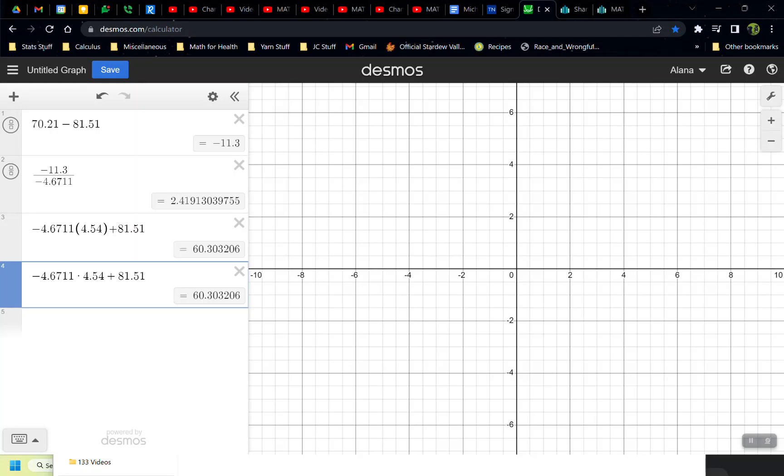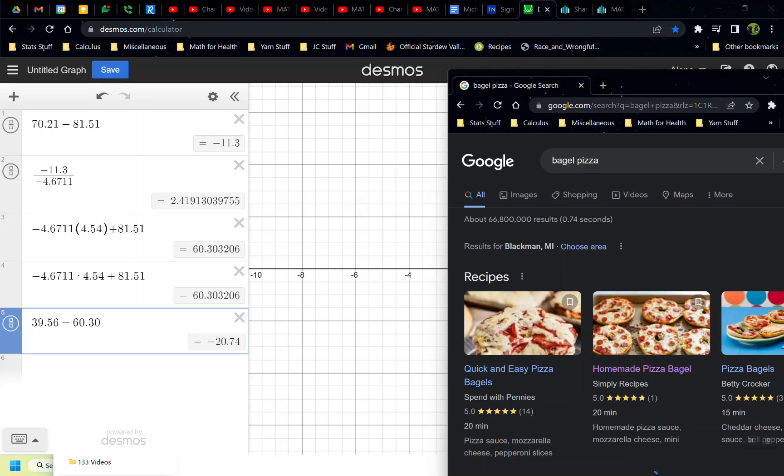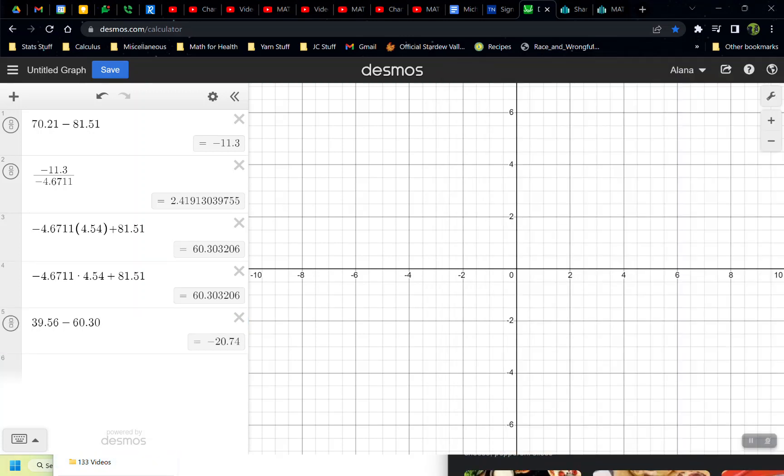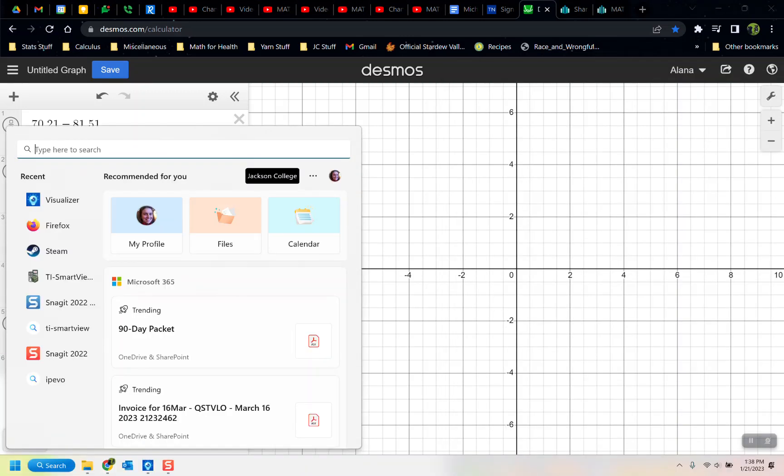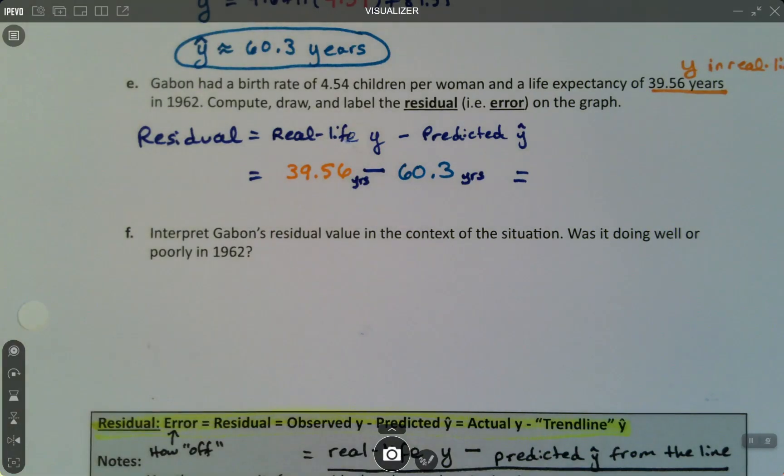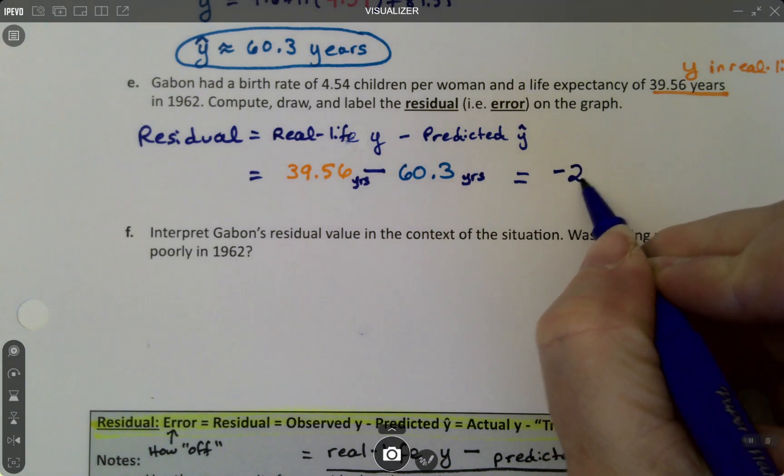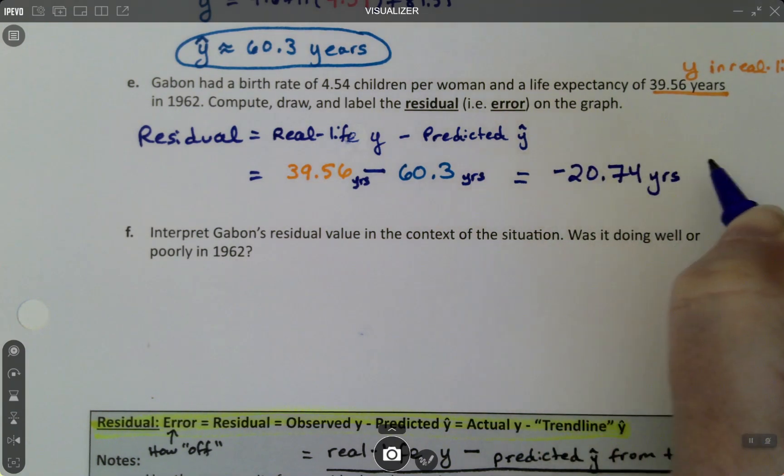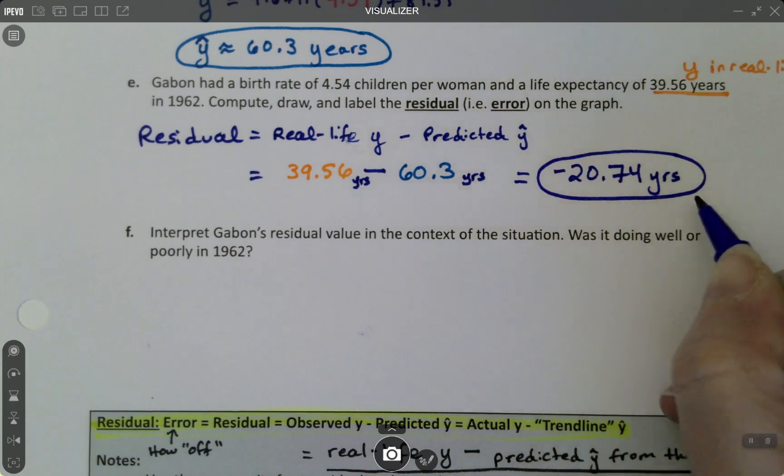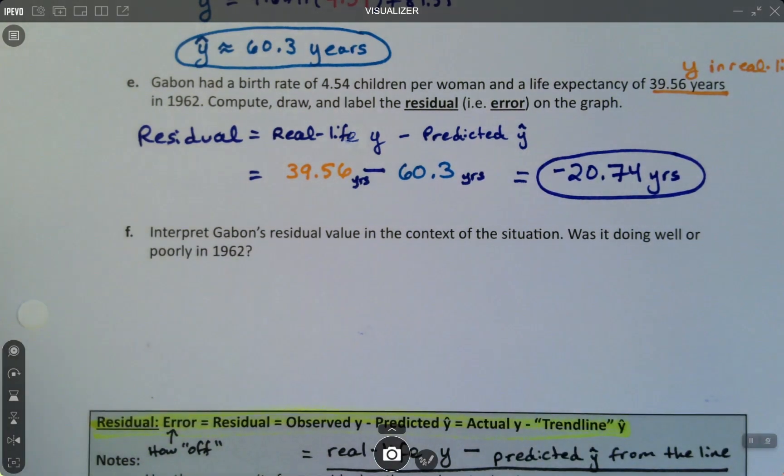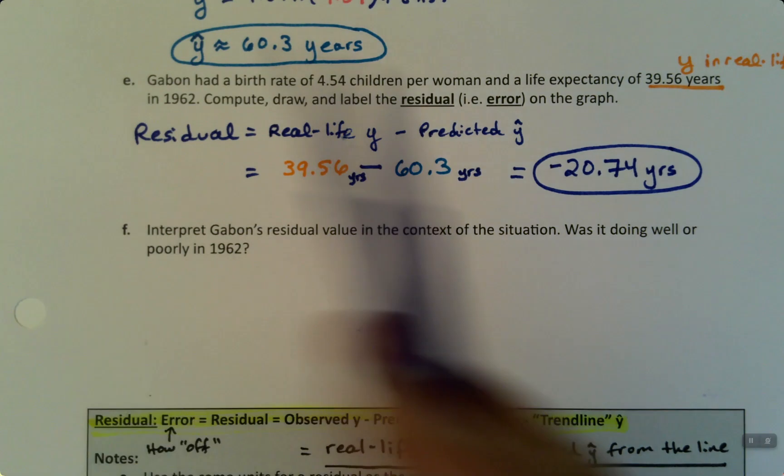39.56 take away 60.30, and it became negative 20.74. So this is negative 20.74 years. It has the same unit as our y variables. They were both with years, so it also has years.